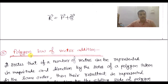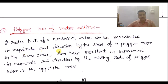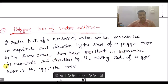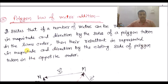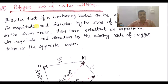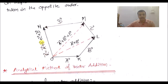The polygon law of vector addition states that if a number of vectors can be represented in magnitude and direction by the sides of a polygon taken in the same order, then the resultant is represented in magnitude and direction by the closing side of the polygon taken in the opposite order. For example, with four sides, the resultant R equals A plus B plus C.